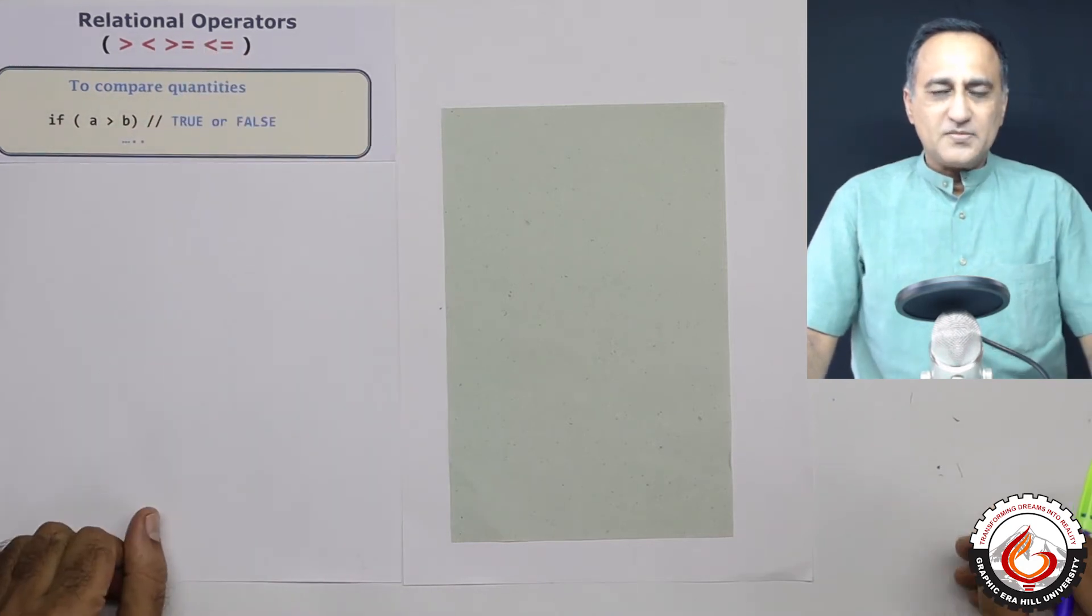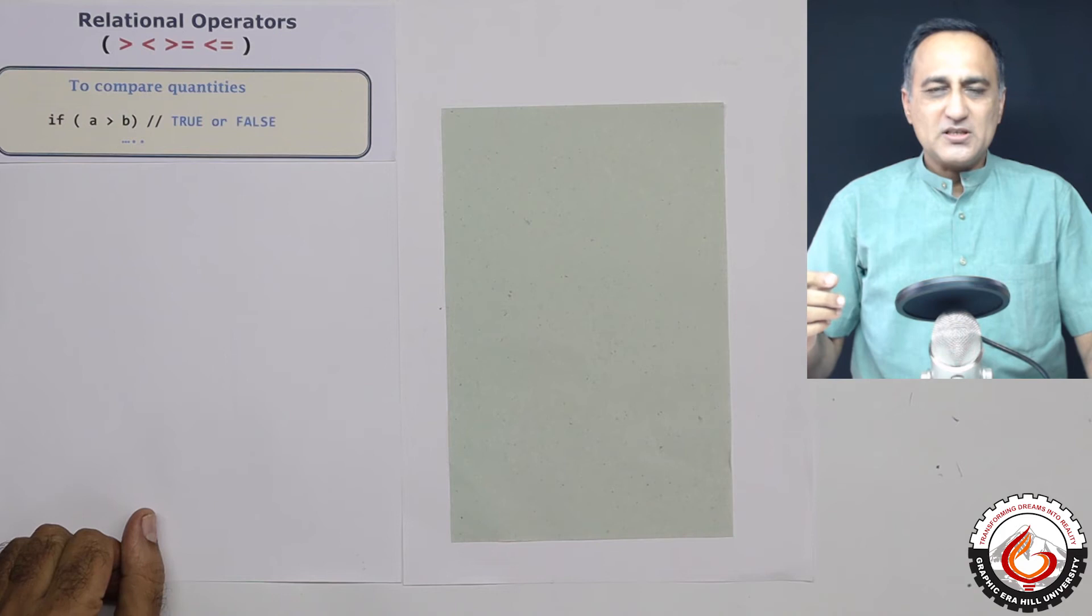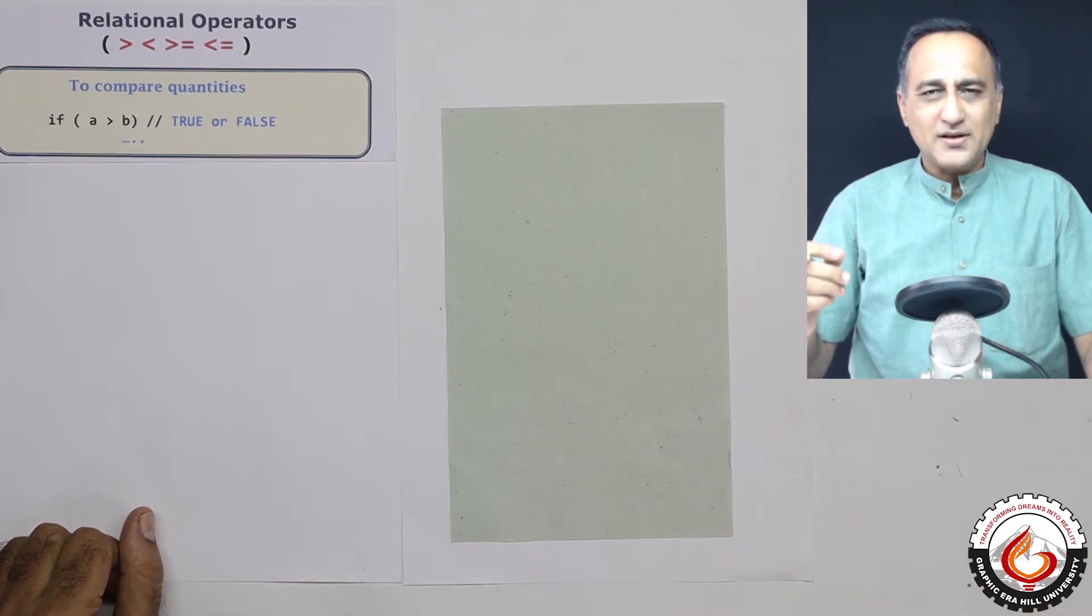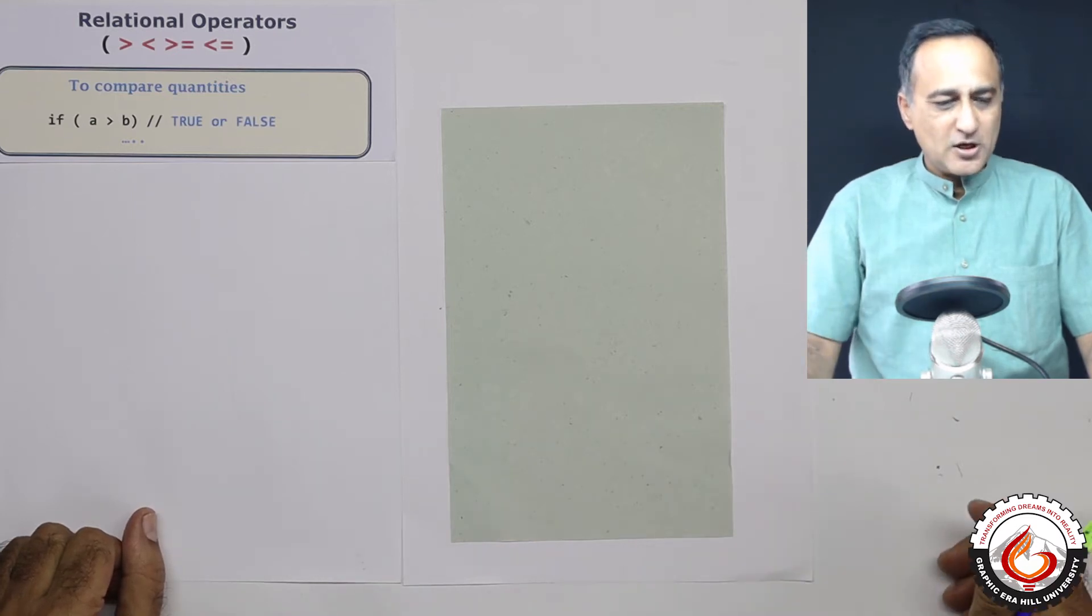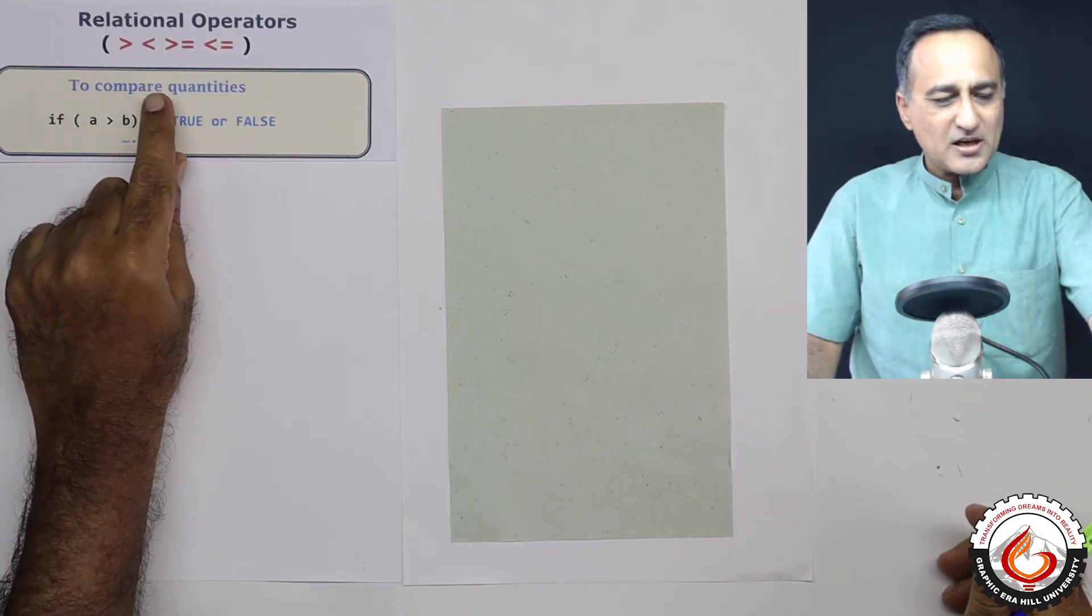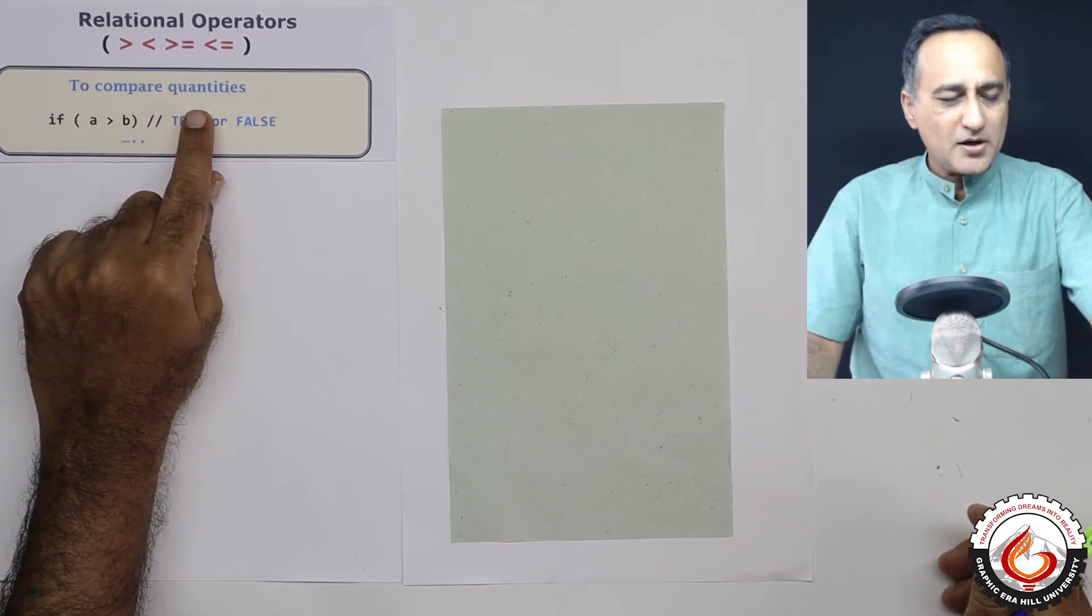Now, these are very frequently used. Say for example, I want to compare two values. Let's say A has got 30 and B has got 40. So if I say if B greater than A in brackets, then it's going to tell me it's true or false. So relational operators are used to compare quantities in memory location.